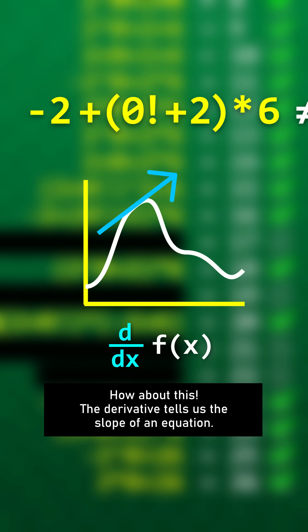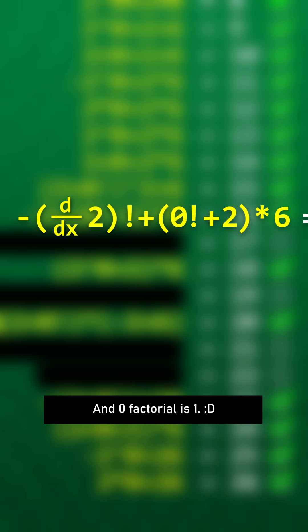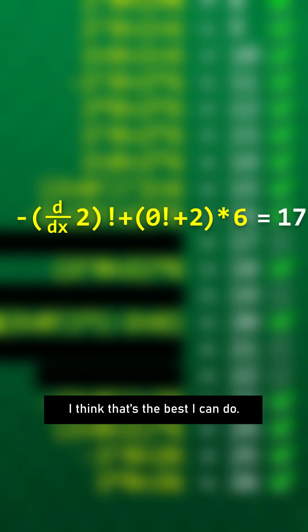How about this? The derivative tells us the slope of an equation. The slope of 2 is, well, 0. And 0 factorial is 1. I think that's the best I can do.